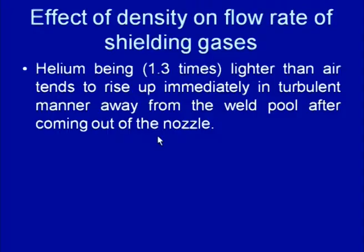Starting with the factors that affect flow rate and the relative effectiveness of shielding gases like argon and helium: helium is much lighter than air, carbon dioxide, and argon. Being significantly lighter than air, helium tends to rise immediately in a turbulent manner away from the weld pool as soon as it comes out during welding. Shielding protection can only be provided if the shielding gas forms a cover around the arc and the weld pool.